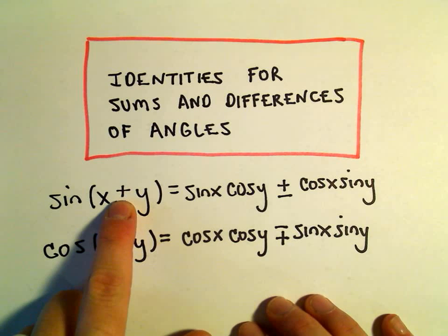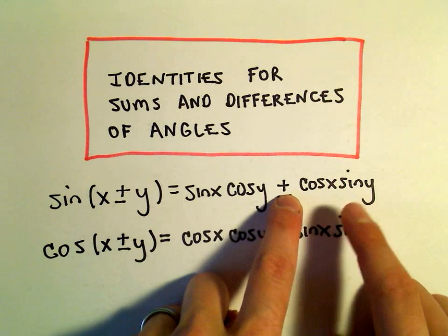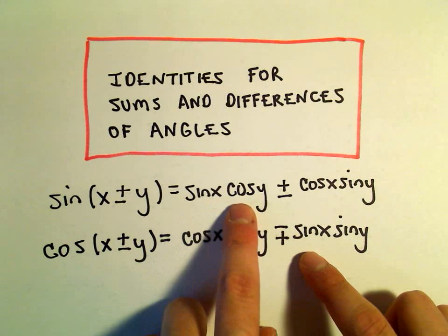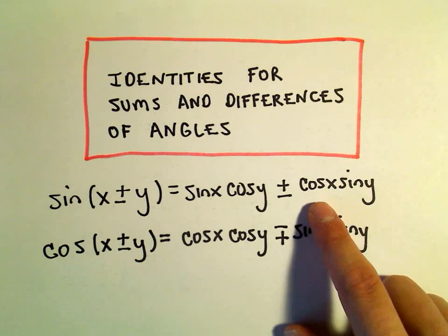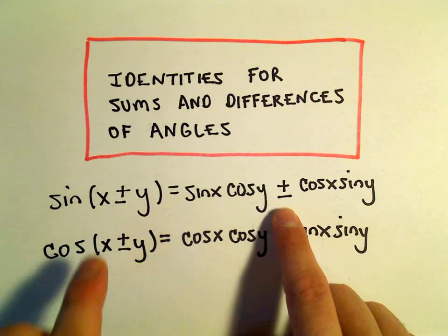If you have sine of x plus y, you get sine x cosine y plus cosine x sine y. If you have sine of x minus y, then you get sine x cosine y minus cosine x sine y. So whatever the sign is, it stays the same.